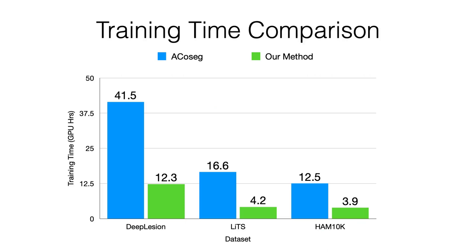This plot shows the training time comparison in GPU hours. Since we only add a classification layer on top of A1, our method does not have much additional parameters compared with A1. Thus, our approach achieves better performance than ACOSAC in general, with only one-fourth of its training time across all three datasets.